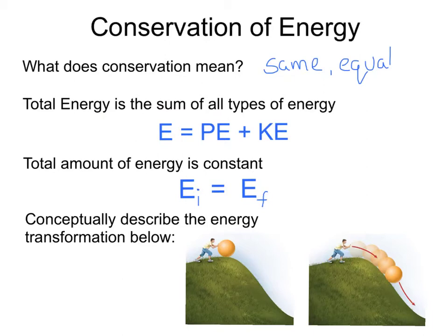And since energy is conserved, the total amount of energy is constant. That is, the total amount of potential and kinetic energy we have to start with is the same as the final amount of kinetic energy and potential energy we end up with.